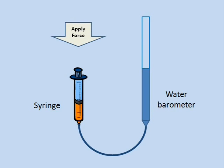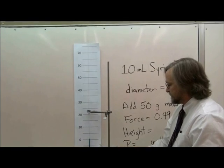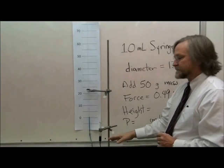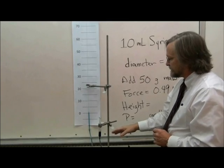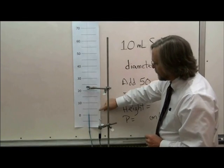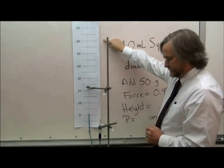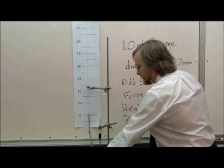When we apply a force to the syringe, the force is transmitted over the surface area of the plunger. Force divided by area is a pressure, and so a pressure develops inside the syringe. We can measure the pressure that develops in the syringe by measuring how high the water in the barometer rises. Here's the actual apparatus: a glass syringe connected to a piece of glass tubing filled with water, with some blue food coloring added so the water in the barometer is easier to see.